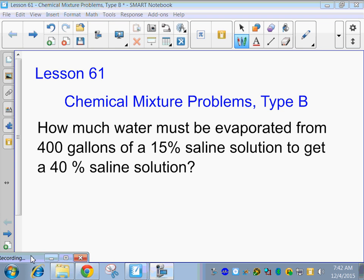Okay, so chemical mixture problems, the second type that we're going to do. How much water must be evaporated from 400 gallons of a 15% saline solution to get a 40% saline solution? We're going to start with those formulas that we did when we did the chemical mixture problems type A. We're going to kind of use the same thing.